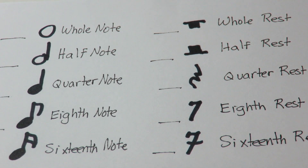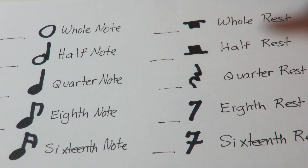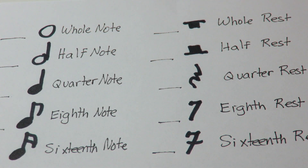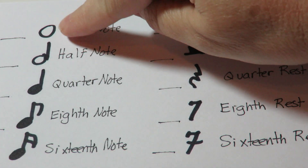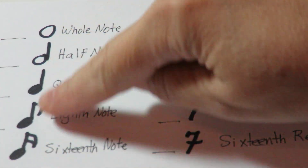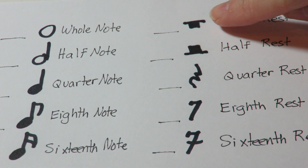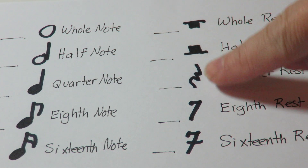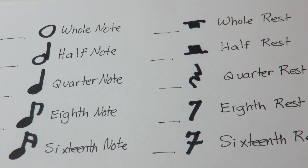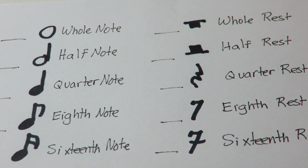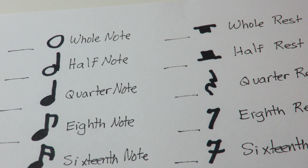We talked about in the first video or in class that each of the notes has a partner rest, and we're really only memorizing five different first names — then identifying whether it is a note because it has the round tummy or note head, or is it a rest because it comes in all kinds of different shapes. Whole, half, quarter, eighth, and sixteenth are the names.